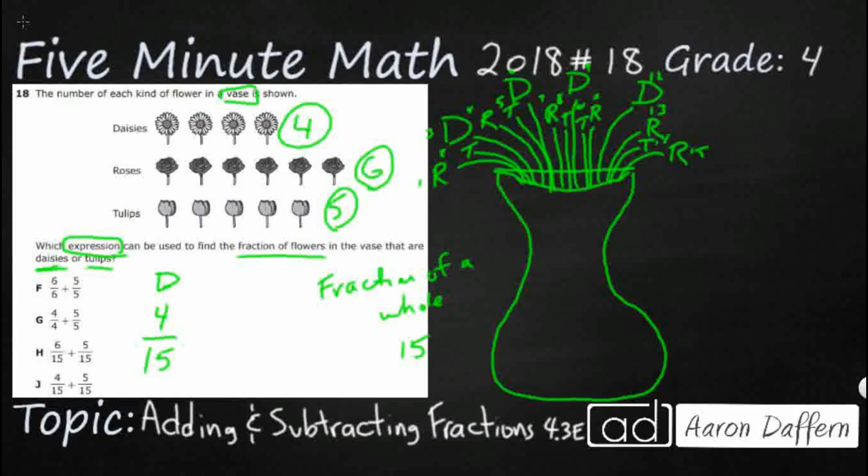And then how many do we have that are tulips? Well, tulips are five. So we've got five tulips out of 15. So four out of the 15 are daisy, five out of the 15 are tulips.